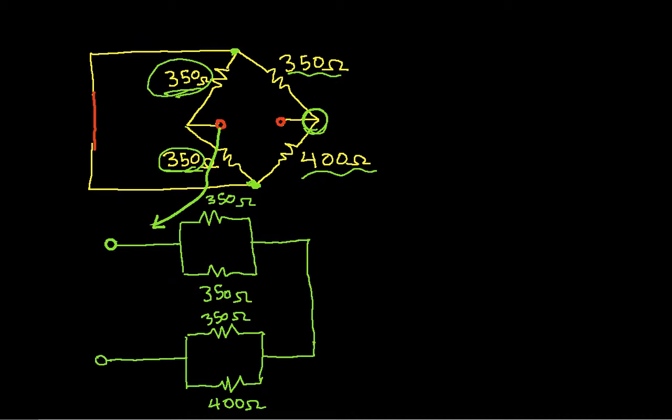So let's start with the top parallel combination, these two guys. In parallel, two 350-ohm resistors will just be half of 350-ohms, which is 175-ohms.